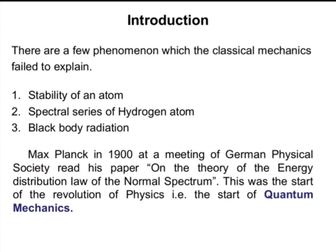Here is the introduction of quantum mechanics. There are a few phenomena which classical mechanics fails to explain. Classical mechanics was given by Isaac Newton in the 17th century. Quantum mechanics was developed in the 19th century by Max Planck at a meeting of the German Physical Society, where he read his paper on the theory of the energy distribution law of the normal spectrum. This was the start of the revolution of physics and quantum mechanics.